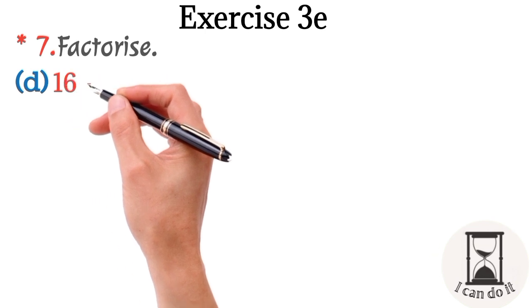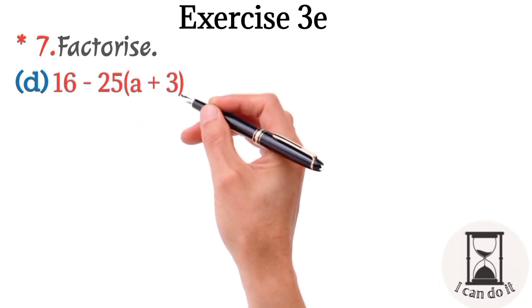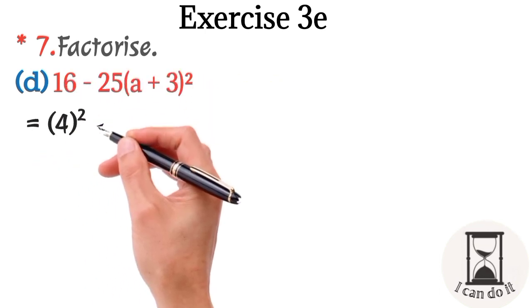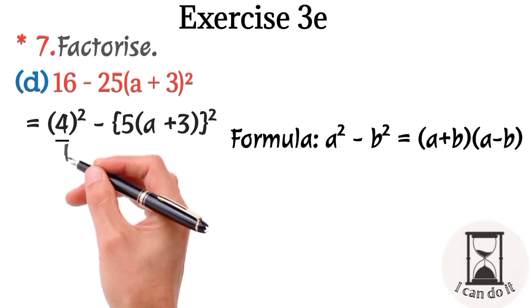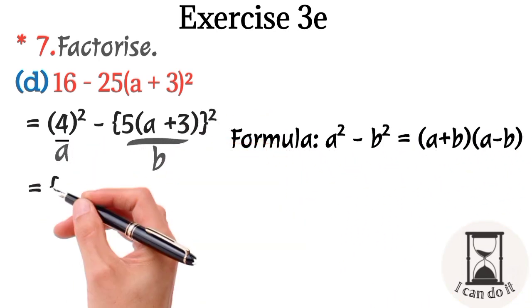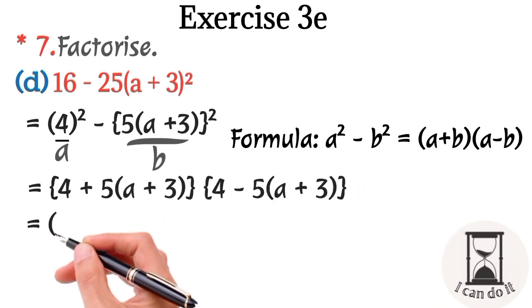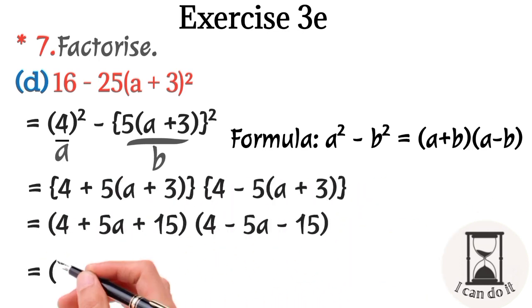Move on to part d. It's 16 minus 25(a plus 3) whole square. Firstly write the square root of 16 and 25. Now 4 is a and 5(a plus 3) is b. Putting values of a and b and simplify it. 19 plus 5a into minus 11 minus 5a is the answer.